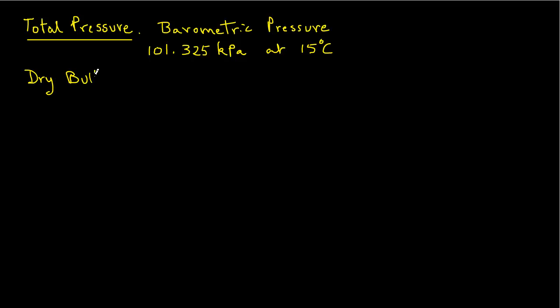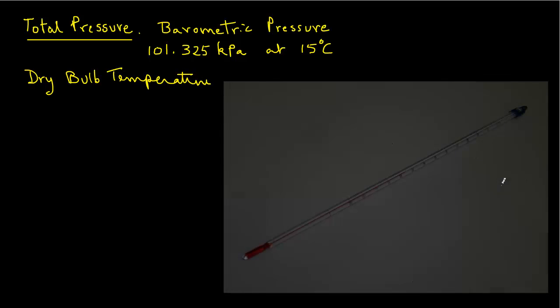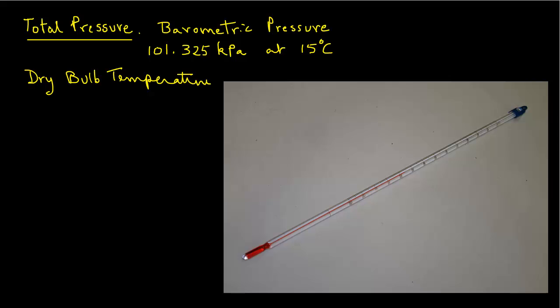Dry bulb temperature is the temperature of air measured with any type of temperature sensor such as a thermometer, thermocouple, or thermistor.